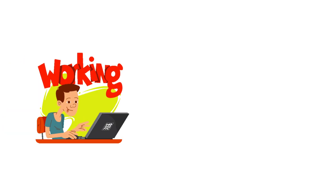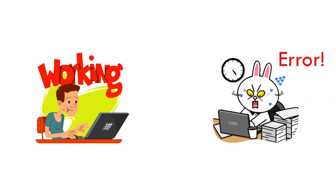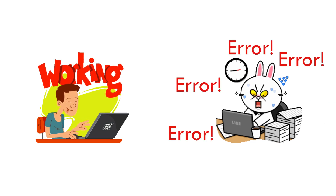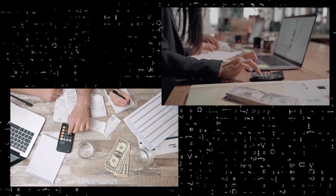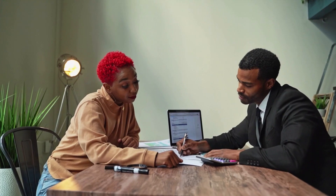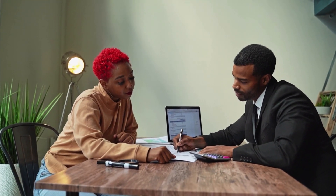An accounting system should be efficient enough not only to prevent errors from occurring, but also identify mistakes that might have already occurred. Control accounts can help to identify errors in subsidiary ledgers. This video presents everything you need to know about control accounts.